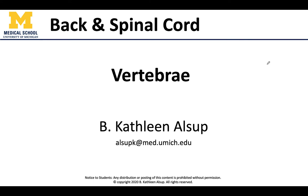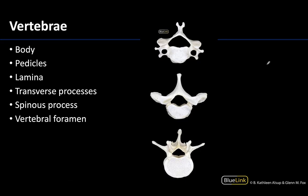Hello anatomy friends, this is Dr. Alsup, and you cannot have a back and spinal cord session without talking about the vertebrae. We're going to talk through some structures that are common to almost all of the vertebrae. We're looking at a superior view of the three movable types of vertebrae: the cervical, the thoracic, and the lumbar. We talked a little bit in the learning objective videos about how to determine which is which, but right now we're going to focus on structures found in all of them.